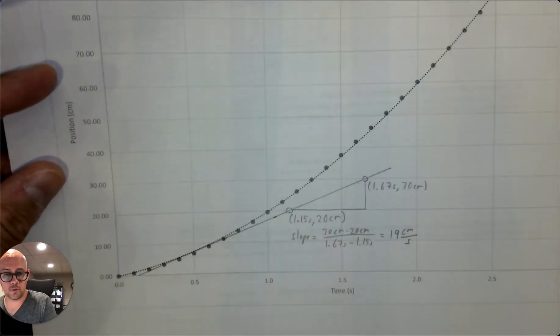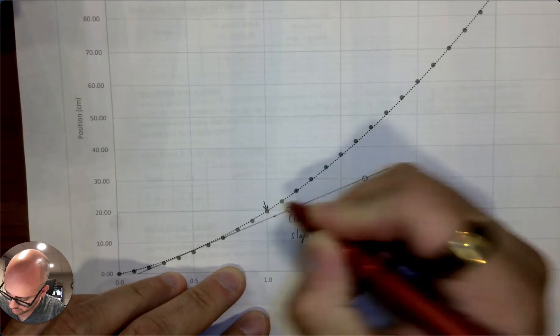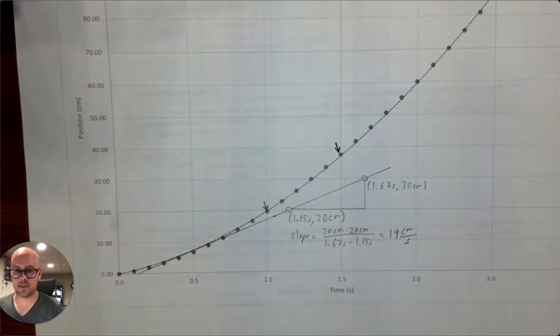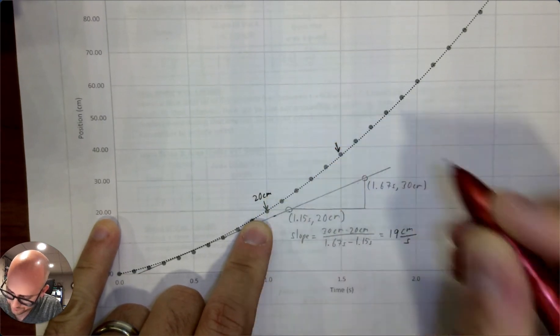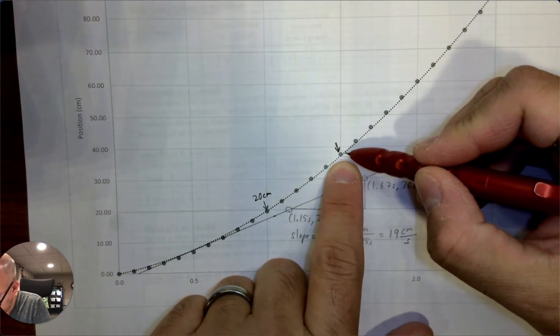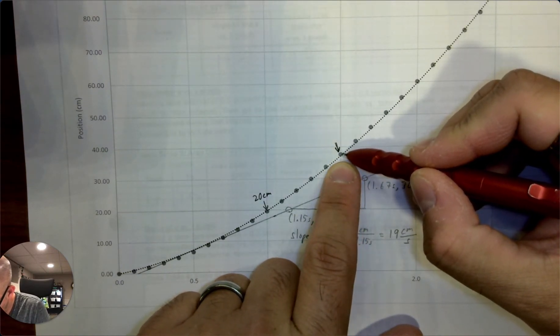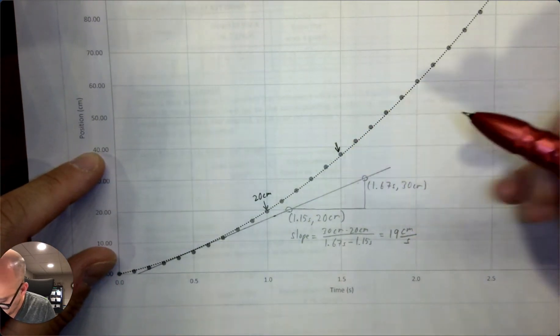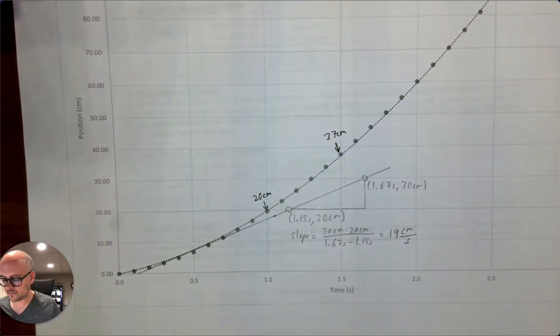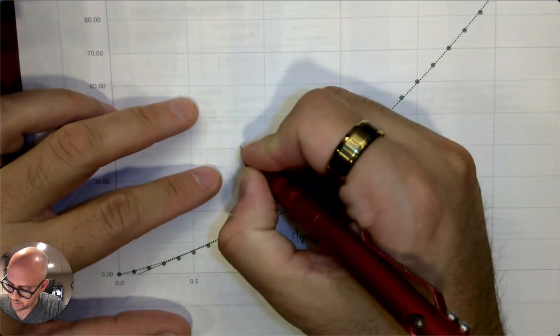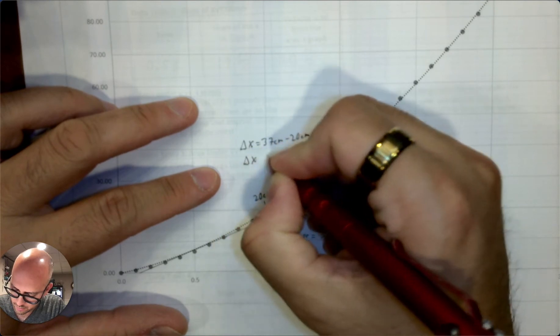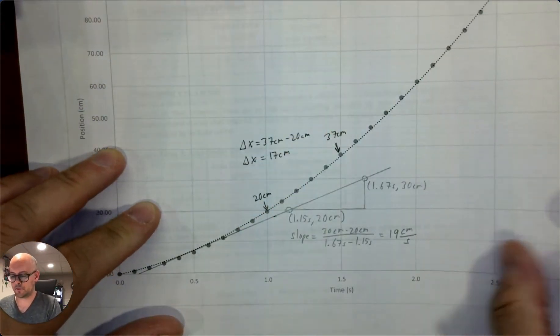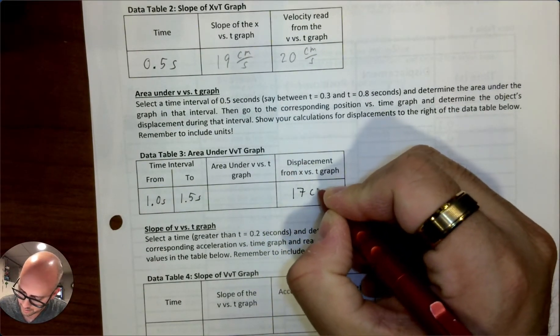So I'm going to do the displacement from the position graph first to show you how that works. So one second to 1.5 seconds. So that's here to there. So displacement is change in position. So it's going to be the difference between the final and the initial position. So the initial position of the trend line is really close to 20. So we're just going to say that that is 20 centimeters. And then the position at one and a half seconds is not yet 40. It's one and a half maybe lines below that. So these go up by two. And so we're going to say that this is 37 centimeters. So you can do your work again here or on the graph, the displacement, maybe 37 centimeters minus 20 centimeters. And so that's a displacement of 17 centimeters.